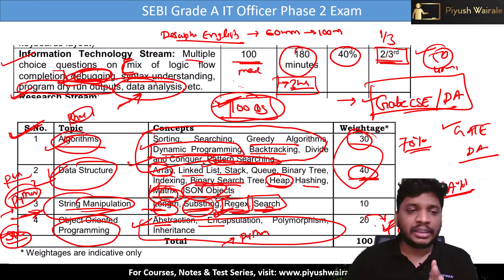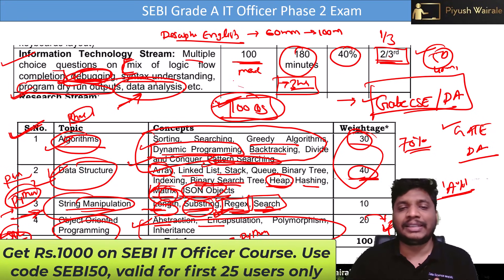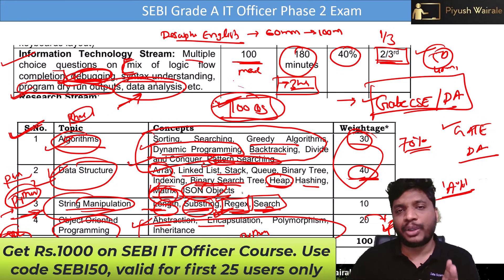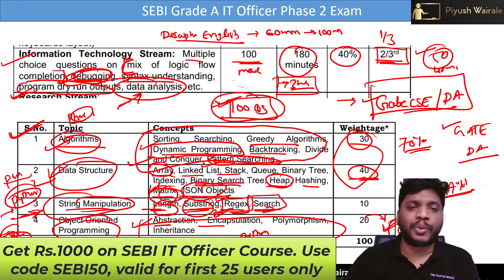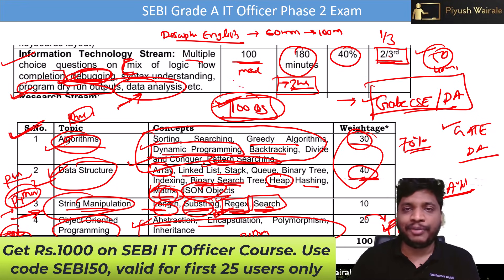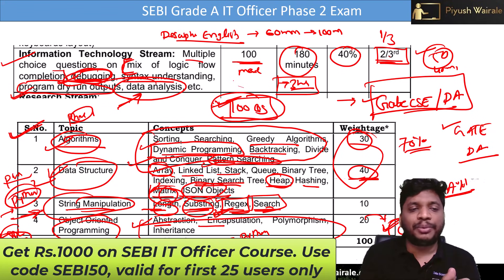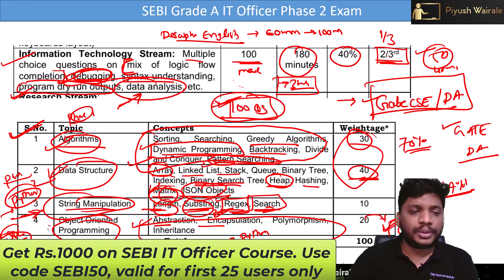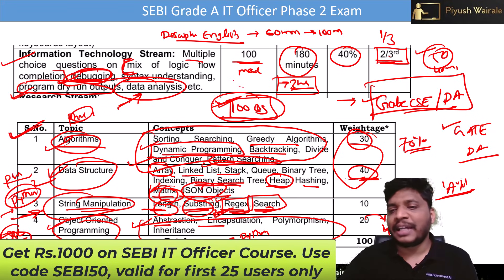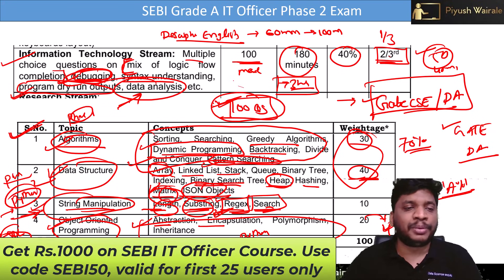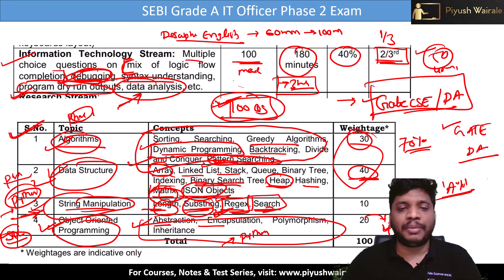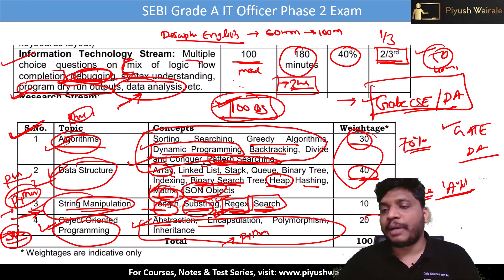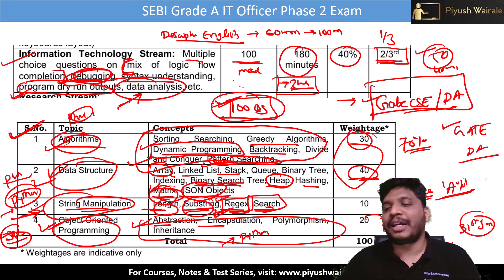This is the plan for phase two. For algorithm and data structure, all the topics are covered in GATE CSC and data science — you can just refer to previous questions and check out my course. String manipulation and OOP concept videos I am going to record. String manipulation will be done by this week, OOP will start next week. My plan is to cover all the things — string manipulation, object-oriented programming, and remaining topics — with all video content ready by 31st of January. You will then have 21 days to watch and practice.